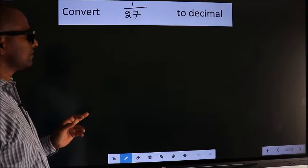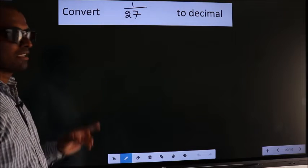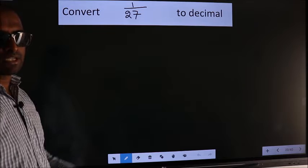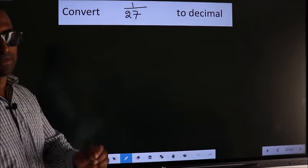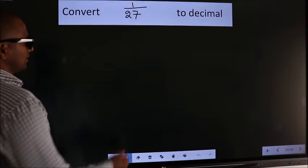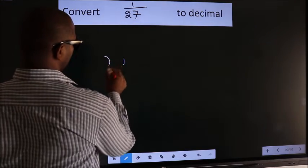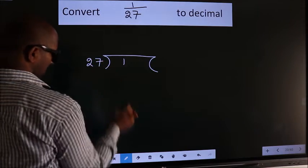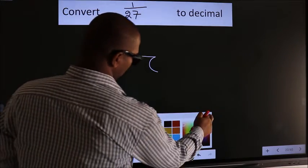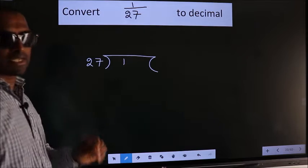Convert 1 by 27 to decimal. To convert this to decimal, we have to divide. And to divide, we should frame it in this way: 1 here, 27 here. This is your step 1.